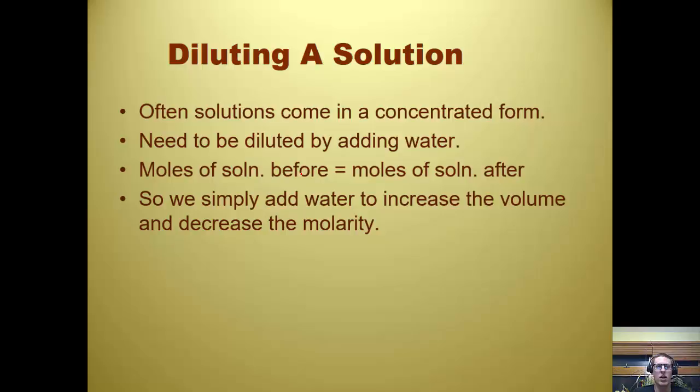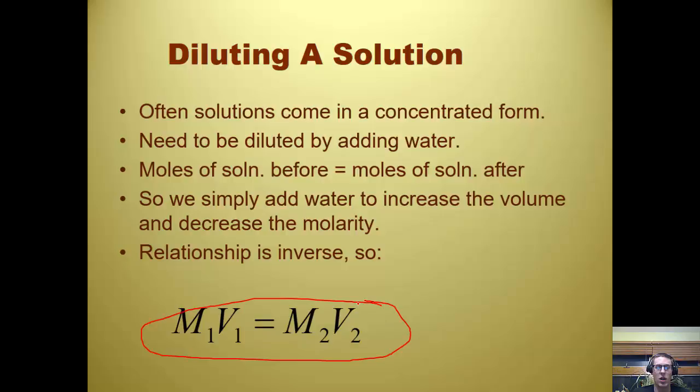So the relationship is inverse. What we can do is we can use this formula, M1V1 equals M2V2. This is something I used in the lab a lot, too. We would make a standard solution and then store it, and then anytime I needed to use it, I could dilute it, take some out, dilute it, and I would have the actual concentration that I need.